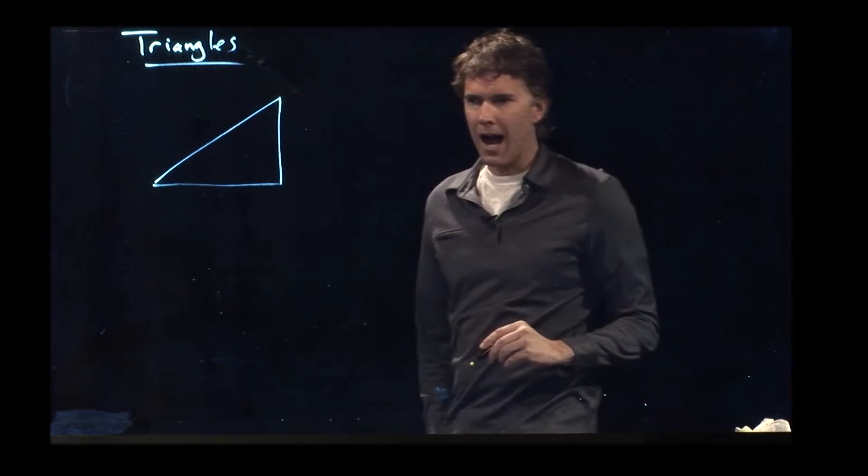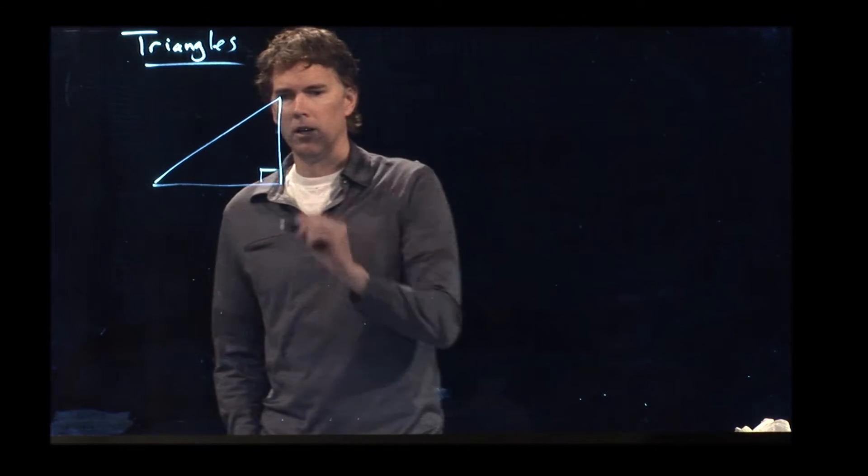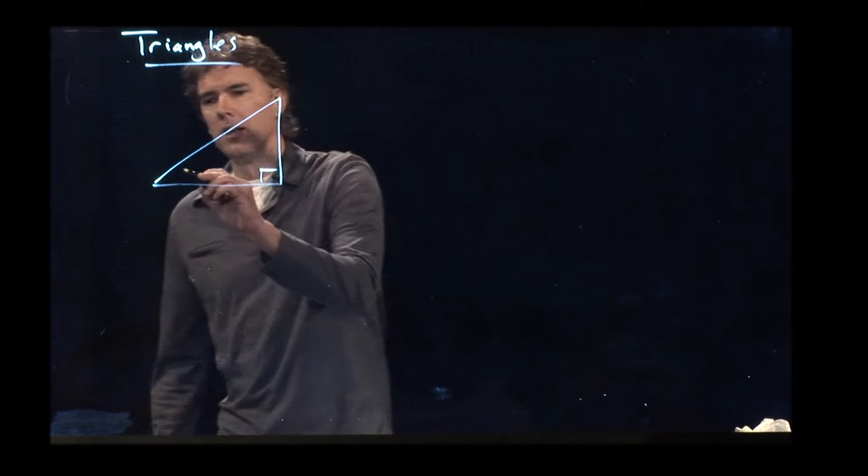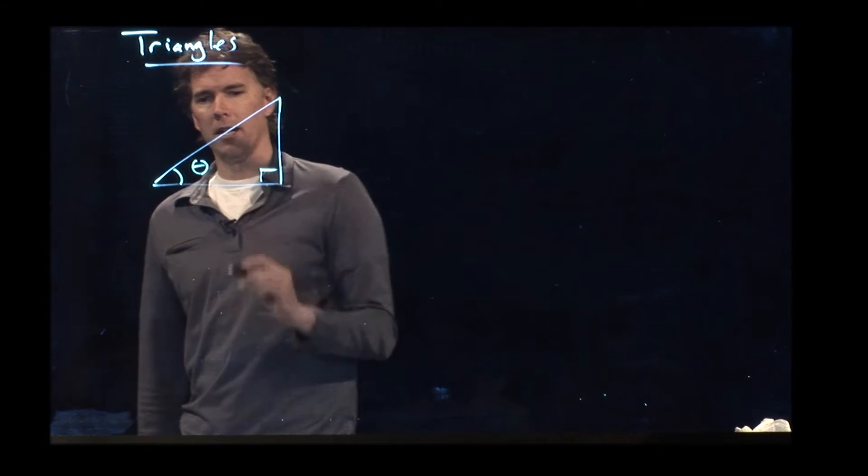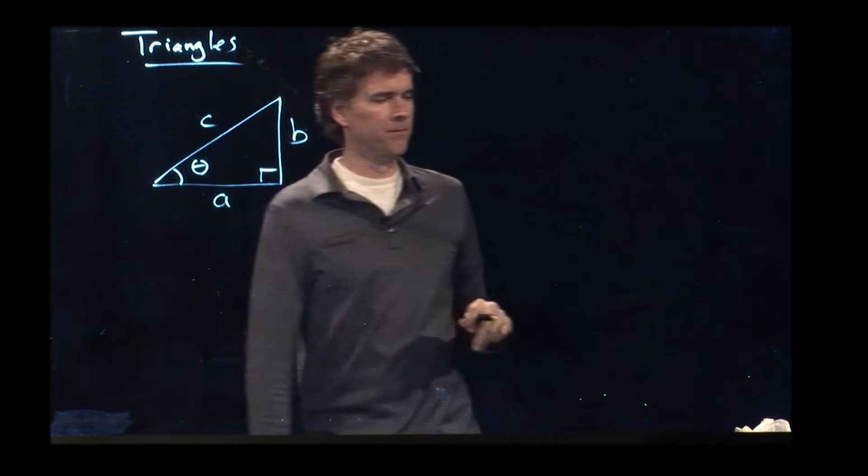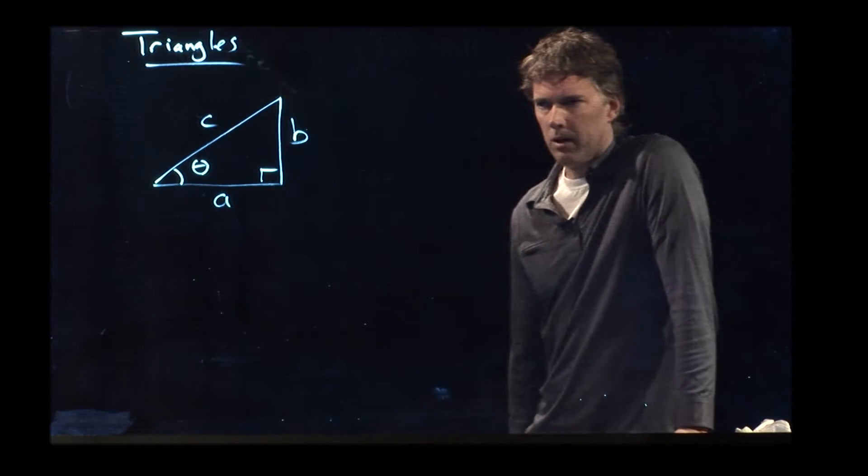That is a special kind of triangle called a right triangle. So we put that symbol right there, which means 90 degrees. Now, if we label this theta and we label the sides ABC, what do we know about triangles?